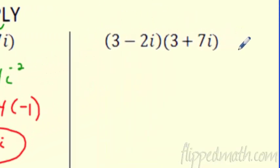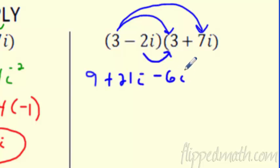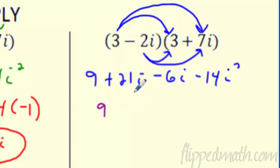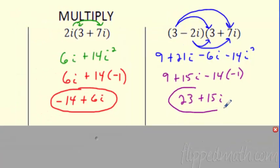For double distribution — or FOIL — three times three is nine. Three times 7i is 21i. Negative 2i times three is negative 6i. Negative 2i times 7i is negative 14i squared. Combining like terms: 21i minus 6i is 15i. And negative 14i squared becomes plus 14, since i² equals negative one. Nine plus fourteen is twenty-three. Final answer: 23 plus 15i.